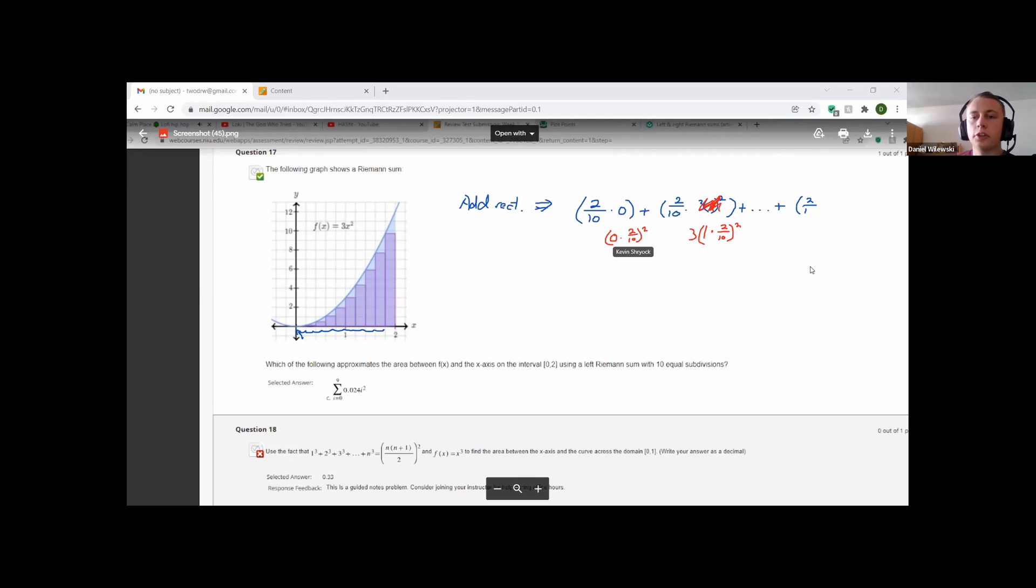Yeah. So you replace it with I times the width and then put it in the function. Yeah, 9. Yeah, exactly right. So 9 rectangle widths and up. Yep. Okay, there we go.